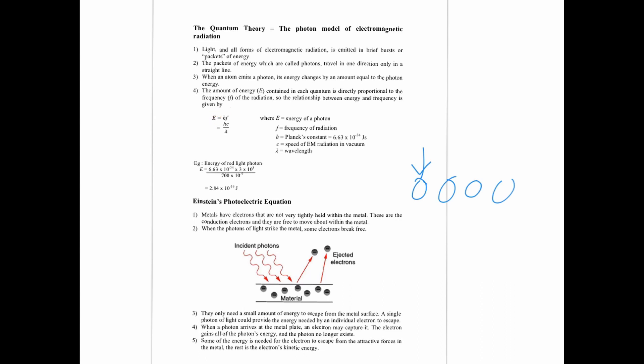You can convert frequency to wavelength using v = fλ, so f = v/λ, which becomes f = c/λ because all EM radiation travel at the speed of light c. So you can use either E = hf or E = hc/λ — that is your energy of a photon equation. Max Planck left the idea there, and Einstein then used it to explain photoelectric emission.